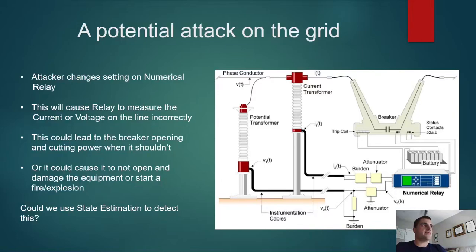Essentially for the purposes of this, we're worried about an attacker who's very subtly trying to change the setting in either the potential transformer or the current transformer, which would give a bad voltage or current reading. This could be bad because it could cause a relay to not break when the voltage conditions are dangerous, or it could cause it to break and cause disruptions when situations are not dangerous, neither of which is ideal. We're going to see if we can use state estimation to detect this in a simple example.